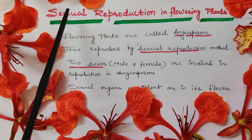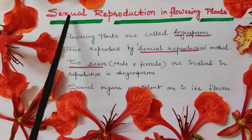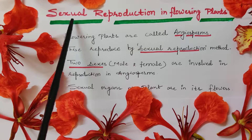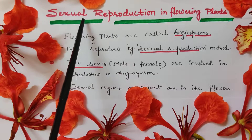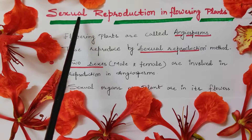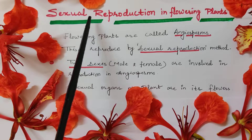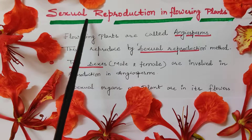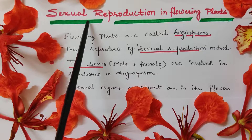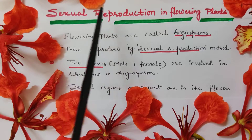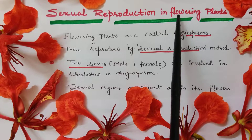Now, sexual reproduction in flowering plants. As already discussed, in this mode of reproduction two sexes are involved, i.e., male and female, and there is a role of gametes in this method of reproduction.